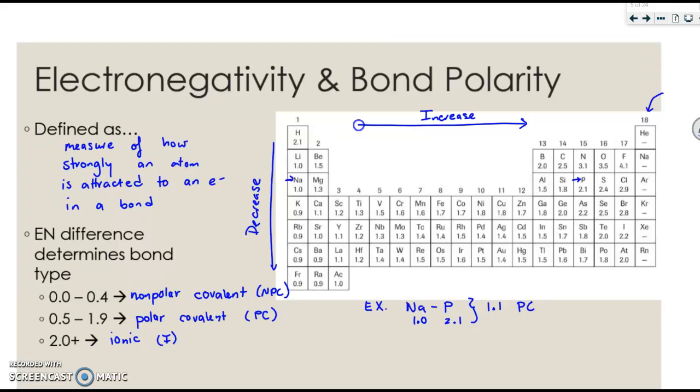Let's try a few. So Li and F, Al and Si, and C and N. Please pause the video and try identifying the bond type for these three.